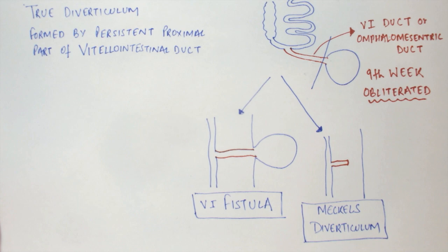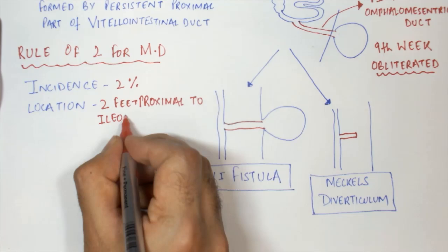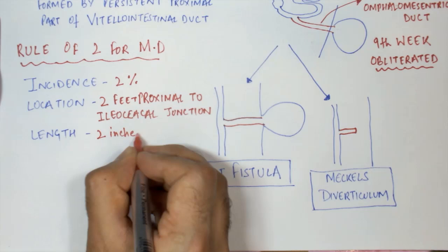Now let's talk about the rule of 2s for remembering the important stats for Meckel's Diverticulum. Its incidence in the general population is about 2%, and the most common location of Meckel's Diverticulum is 2 feet proximal to the ileocecal junction. It is mostly 2 inches in length.